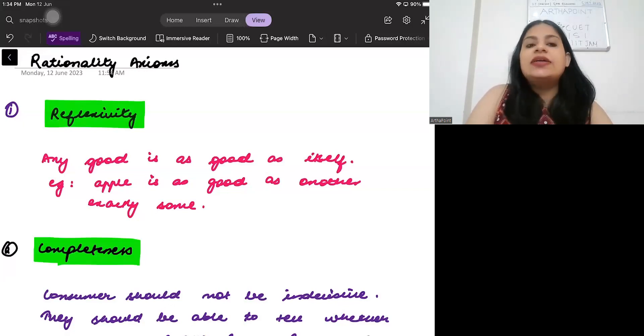The first axiom says that there should be reflexivity. What is reflexivity? Reflexivity suggests that any good is as good as itself. What does this mean? It means that if I give you two apples that are exactly the same, exactly the same size, exactly the same shape, everything is the same, then you should not say I prefer one apple over the other. Similarly, if I give you two ballpens, let's say Renault ballpens, then you should not be saying I prefer one ballpen over the other if they are exactly the same. So one good is as good as itself. This is reflexivity.